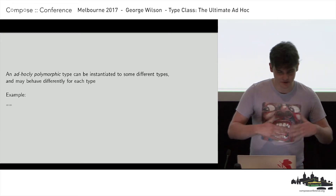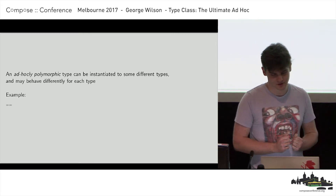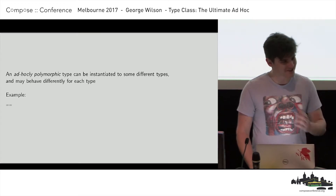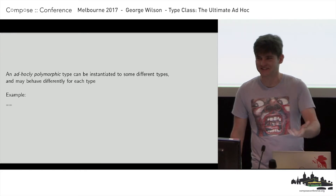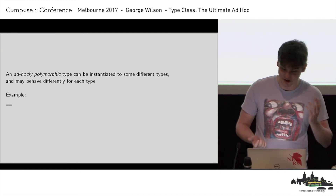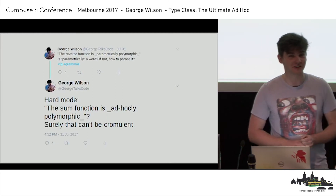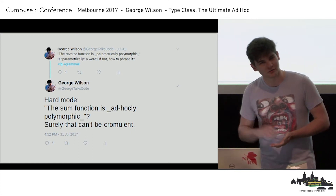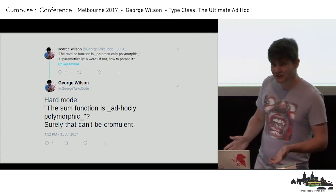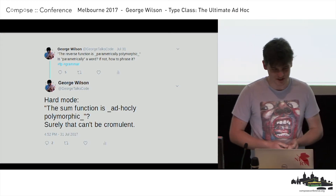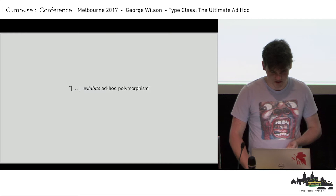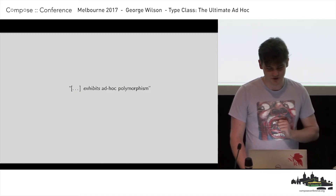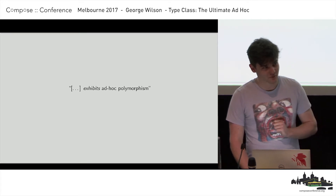This is an example of an ad hoc polymorphic type. And that word 'ad hocly' — that's atrocious, isn't it? I asked the source of all human knowledge, Twitter: if the reverse function is parametrically polymorphic, is the sum function ad hocly polymorphic? We had quite a good discussion about it, and I think the conclusion we drew is that we say something exhibits ad hoc polymorphism. So that's how I'm going to phrase it from now on to avoid saying 'ad hocly.'